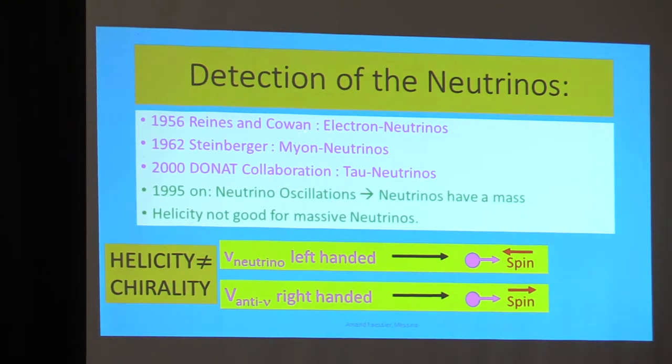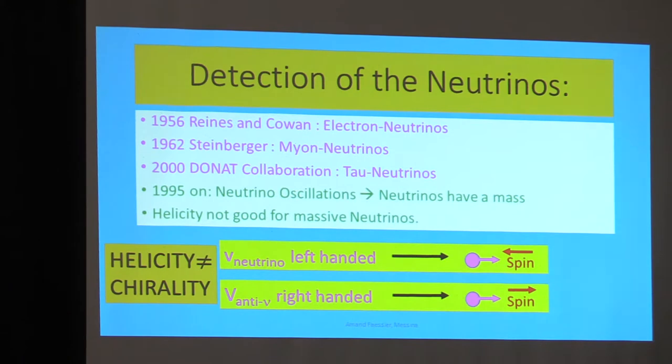The neutrino was measured by Reines and Cowan in 1956. In 1995, I had Reines invited to the Erice School on Nuclear Physics. A month later he got the Nobel Prize. Cowan was already dead, so Cowan did not get the Nobel Prize, but Reines got it. And Reines told me he met Cowan at the airport in Chicago. They had a two-hour shift of airplanes, and they decided with a cup of coffee to do something important: to detect the neutrino. And indeed, they succeeded.